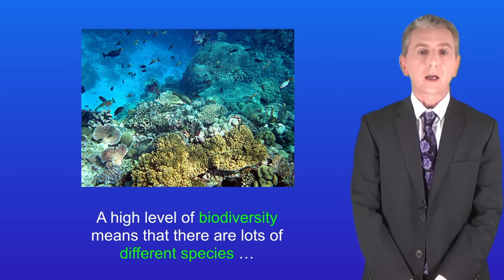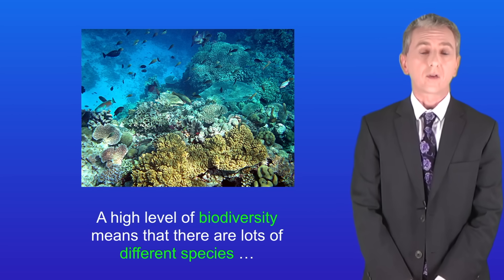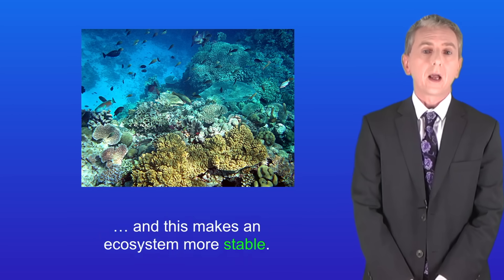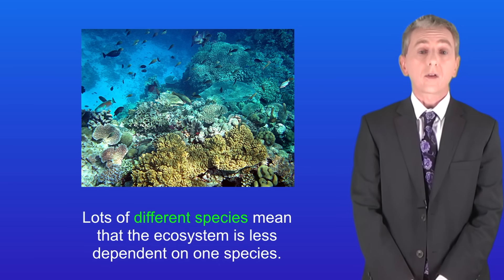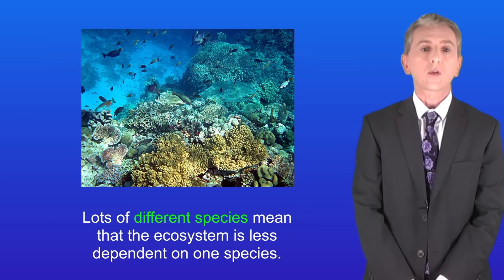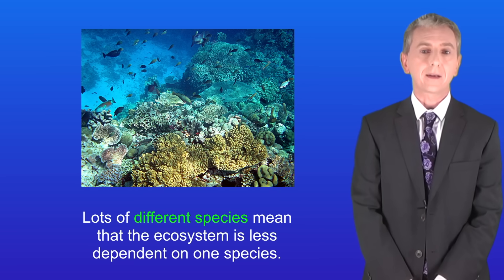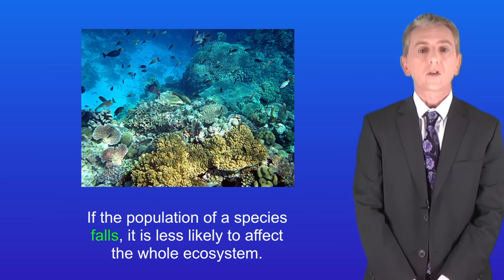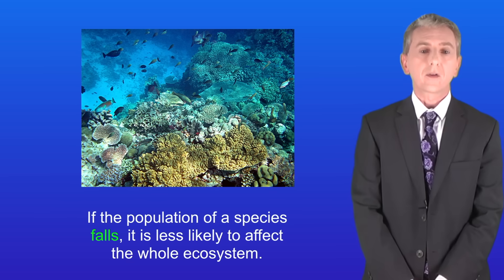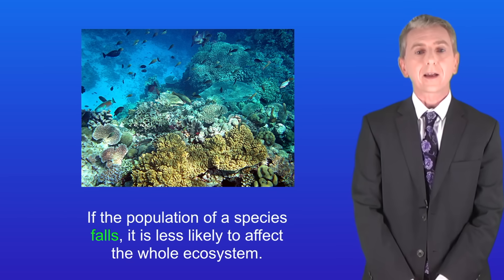A high level of biodiversity means that there are lots of different species, and this makes an ecosystem more stable. Lots of different species mean that the ecosystem is less dependent on one species, so if the population of a species falls it's less likely to affect the whole ecosystem.